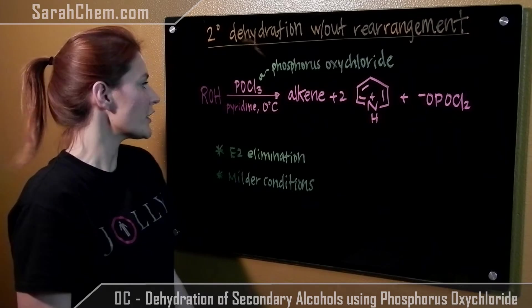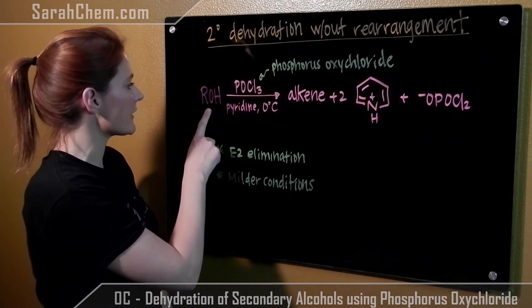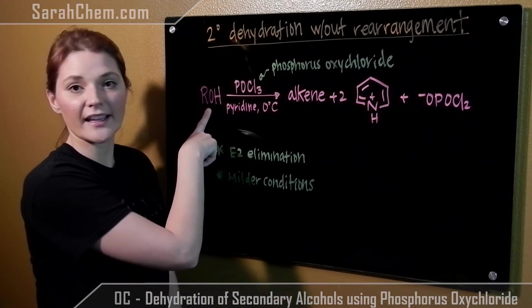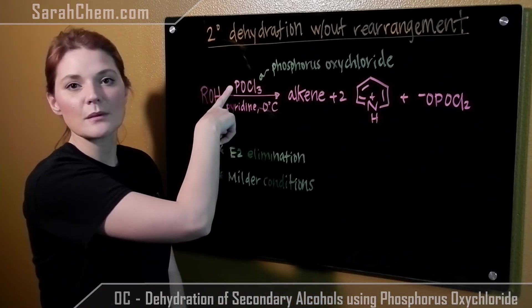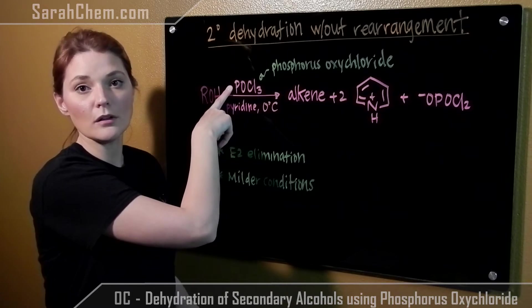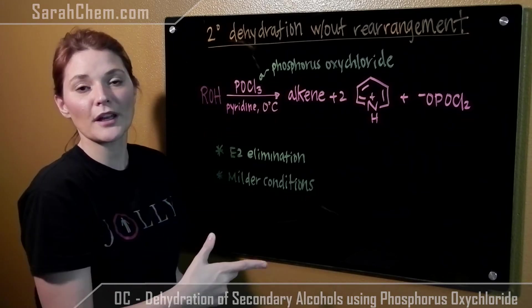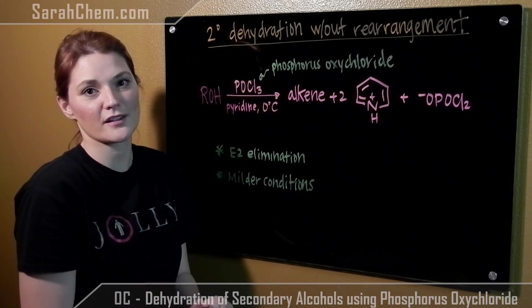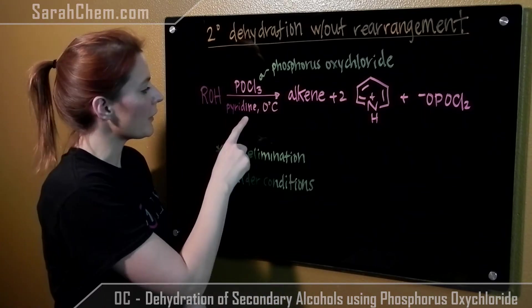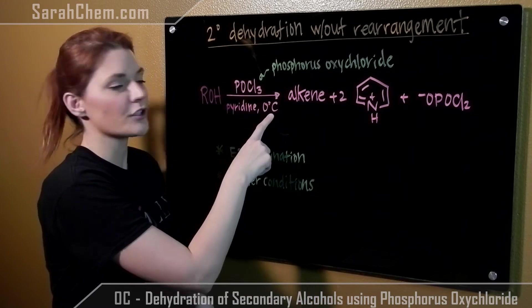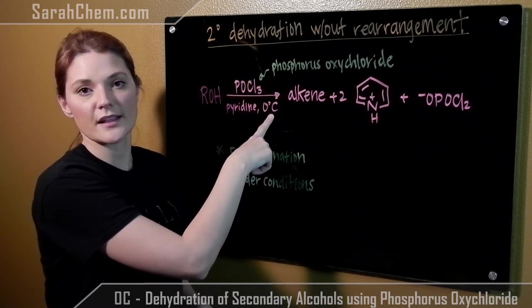So if you take a look at the basic setup, we have our secondary alcohol, we have POCl₃ — sometimes called POCl, or its proper name is phosphorous oxychloride. We'll also need pyridine and a temperature of 0 degrees Celsius.